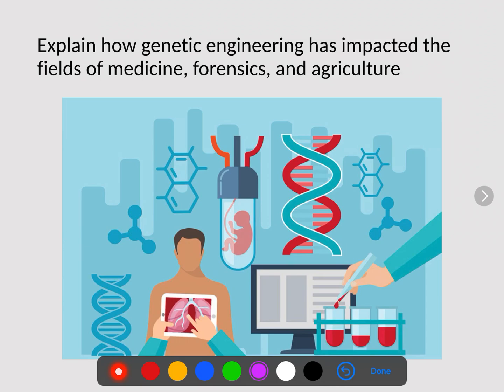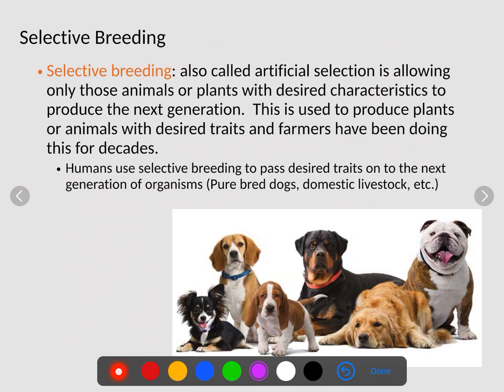When we're talking about genetic engineering, we're talking about how humans can alter DNA in order to produce some sort of new product. Genetic engineering has been around forever — humans have been genetically engineering organisms as long as human history has existed, not by cutting DNA, but through a process called selective breeding. Selective breeding, also called artificial selection, is allowing only those animals or plants with desired characteristics to produce the next generation, and farmers have been doing this for decades.